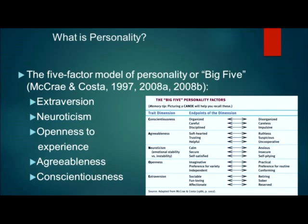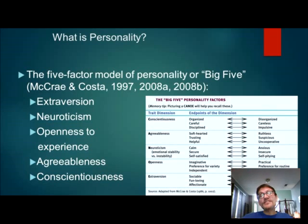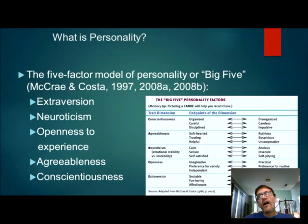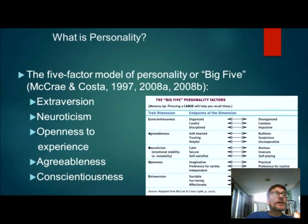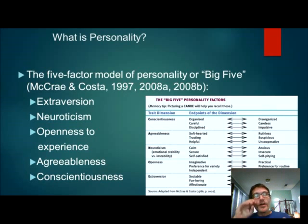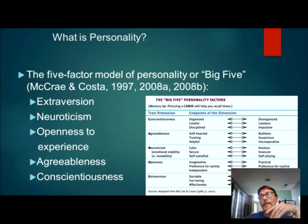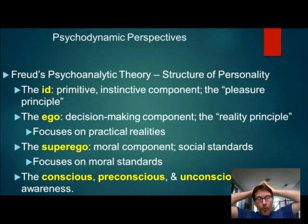For each of the five factors, like Conscientiousness, you fall along a continuum — perhaps between organized and disorganized, careful and careless, or disciplined and impulsive. By placing yourself somewhere along these five dimensions, you can accurately describe a person. There are huge cultural differences — Americans tend to be higher in extroversion than people from Asian nations — but you can still describe anyone as some combination of these five factors.